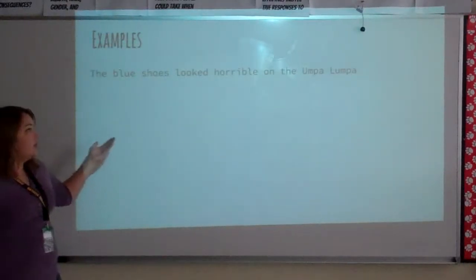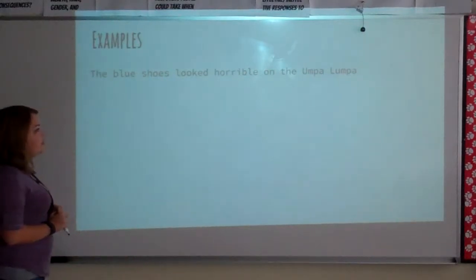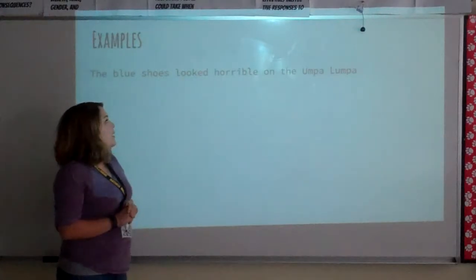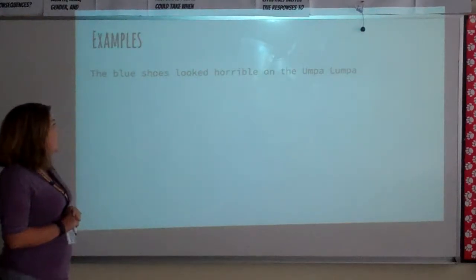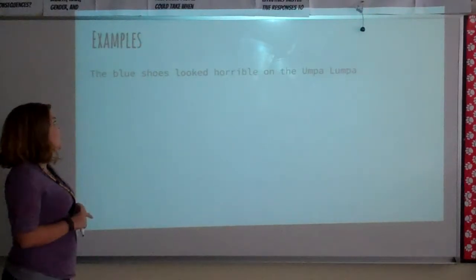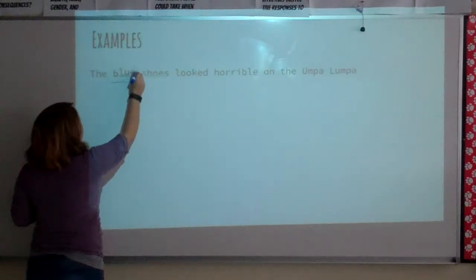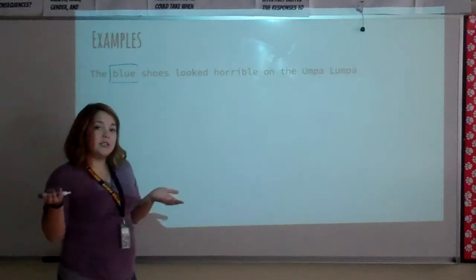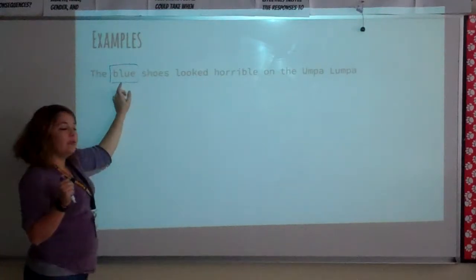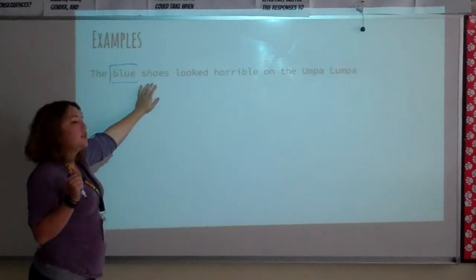So we're going to go right into some examples. This first sentence says: the blue shoes looked horrible on the Koopa Loompa. Let's take a look at which words in here are going to be adjectives. First of all, we have the word blue. Remember, one type of adjective is a color. So blue shoes — that word blue is modifying or describing the word shoes.